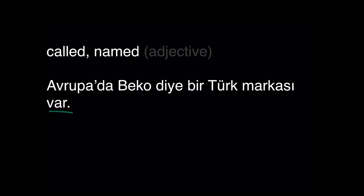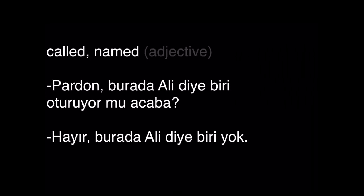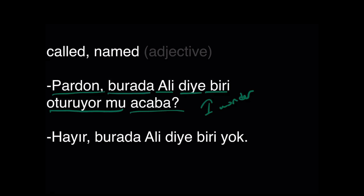Diye as an adjective: called, named. Avrupa'da Beko diye bir Türk markası var — there is a Turkish brand called Beko in Europe. Pardon, burada Ali diye biri oturuyor mu acaba? Acaba is like I wonder — it adds some politeness to the question, especially when you talk to strangers. Is someone called Ali residing here? Hayır, burada Ali diye biri yok.